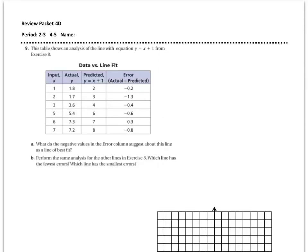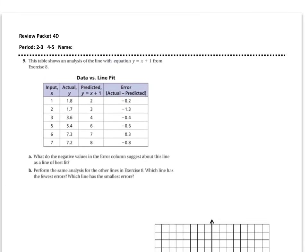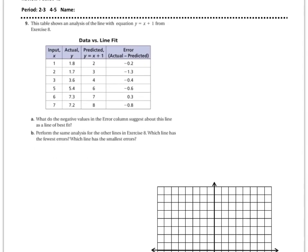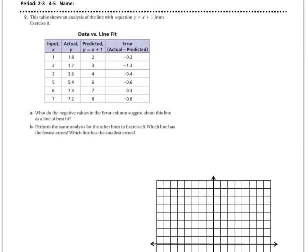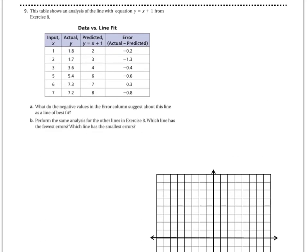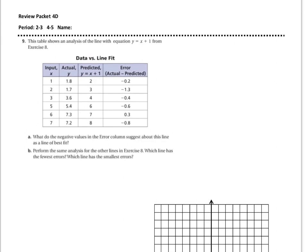And the final problem is right here. This table shows the analysis of the line with the equation y equals x plus 1 from exercise 8. So here's the input, here's the actual, here's the predicted y equals x plus 1, and here's the error. What do the negative values in the error column suggest about the line as the line of best fit?